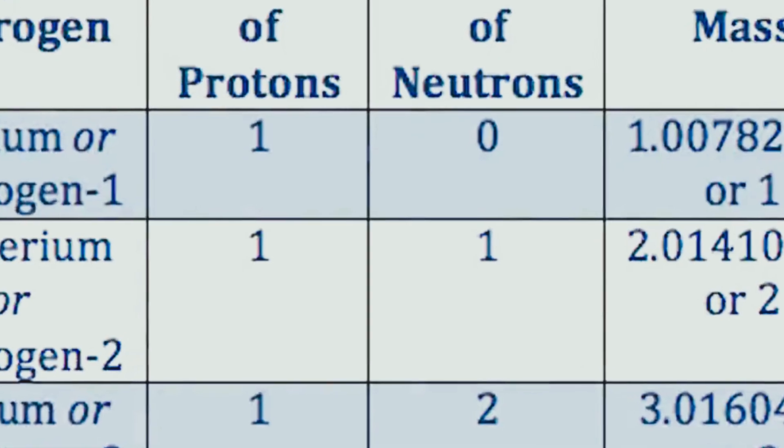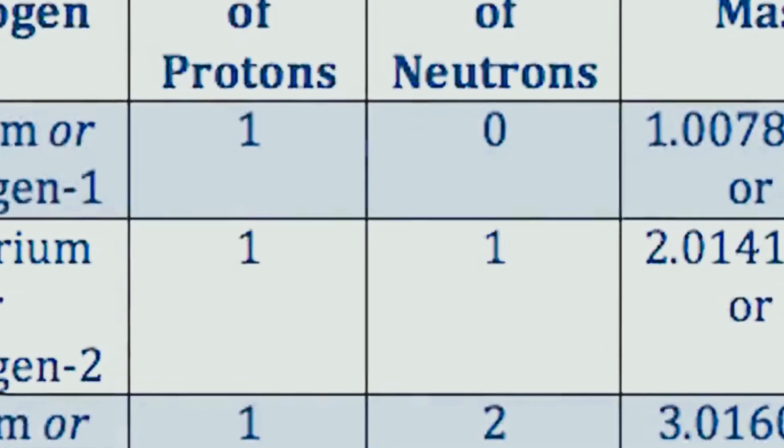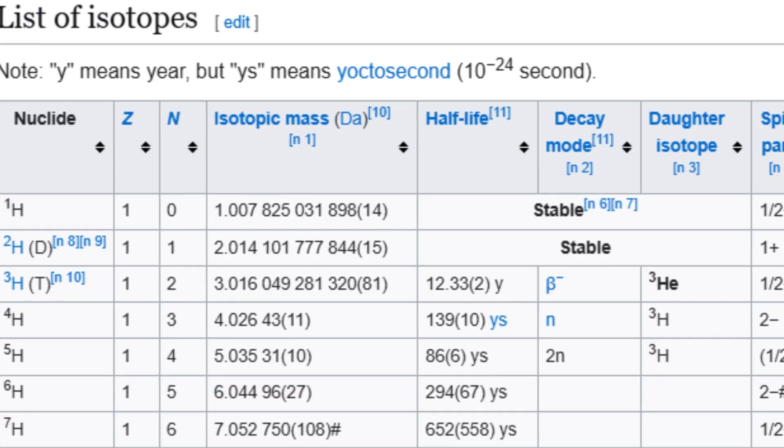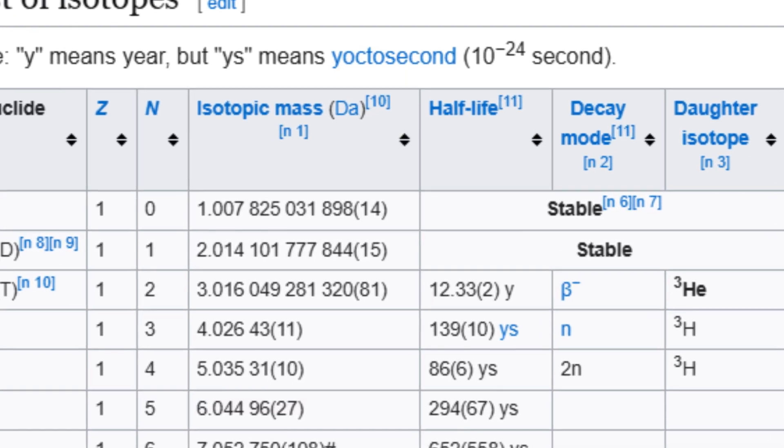Hydrogen-6 does exist, and not only that—it has a very low ground state energy, which means the neutrons are interacting more strongly than anyone expected.